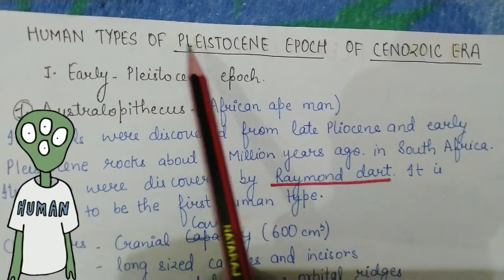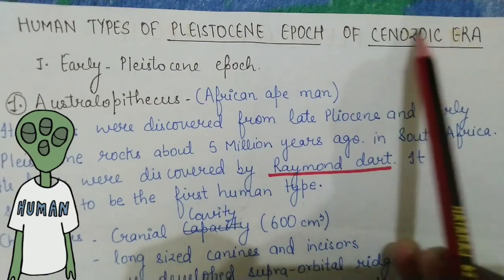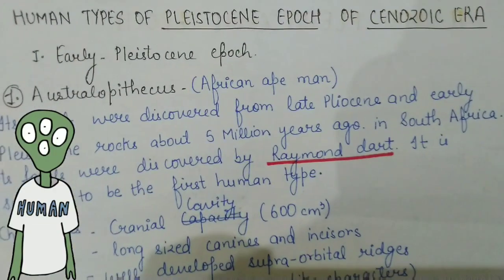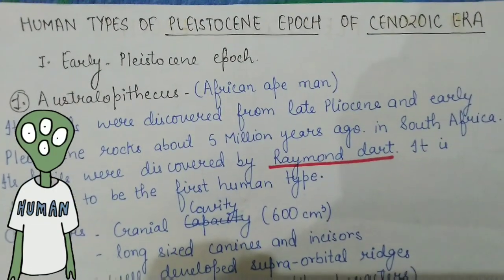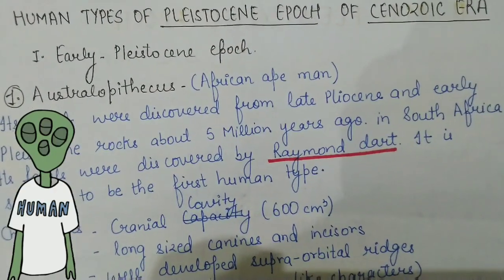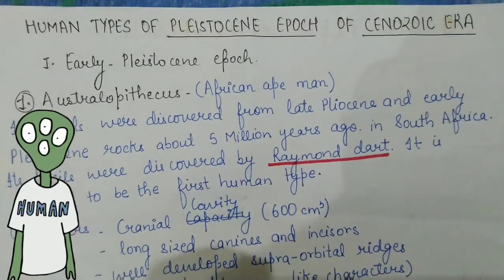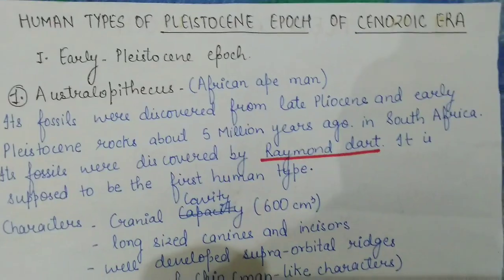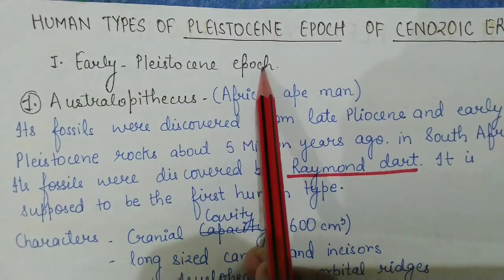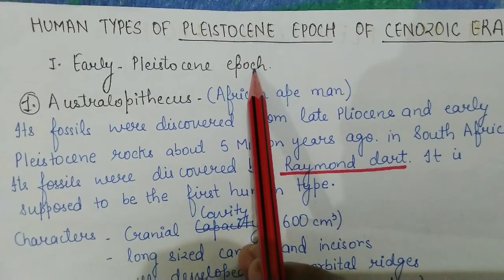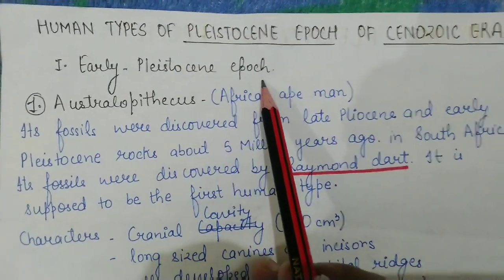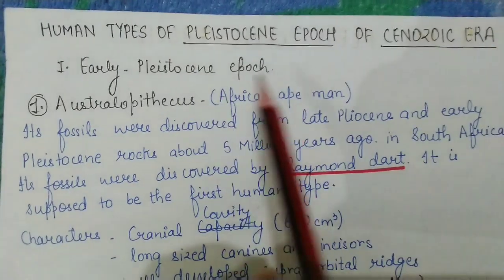Here we are going to study about the human types of the Pleistocene Epoch of the Cenozoic Era. This is the time period where actual humans arise — we can see they were humans and we evolved from them. The Pleistocene Epoch is divided into three different zones: the early, middle, and late Pleistocene Epoch.